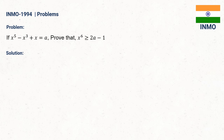Hi friends, this is Prakash. Today I have a problem from INM 1994. The problem is given as: if x^5 - x^3 + x = a, prove that x^6 ≥ 2a - 1. So let's prove this.